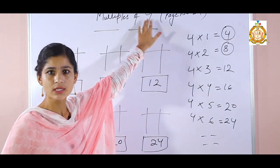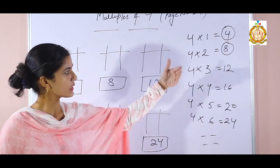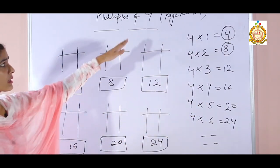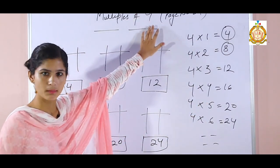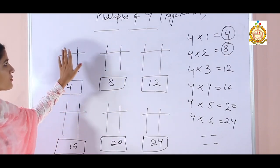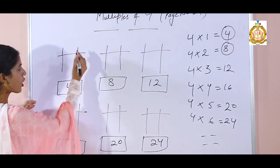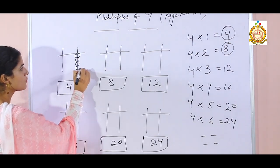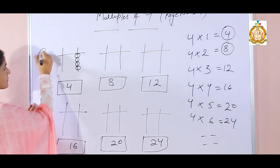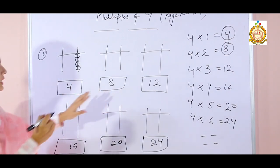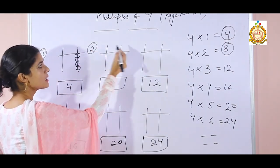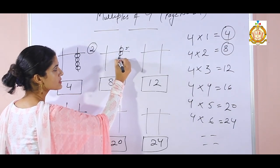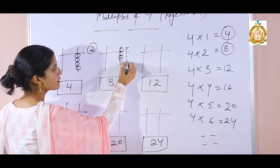Whatever numbers come on the right side — those are the multiples of the given number. So for 4, we have to draw beads. For 4, draw: 1, 2, 3, 4. That is the first part. Now for 8: 1 upper bead plus 3 upper beads — that makes 8.